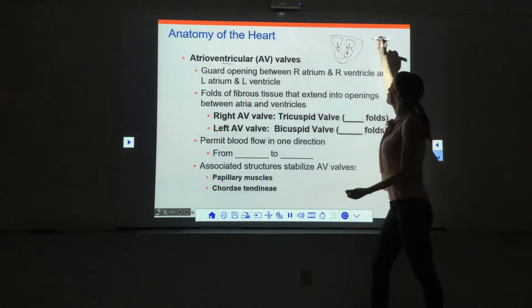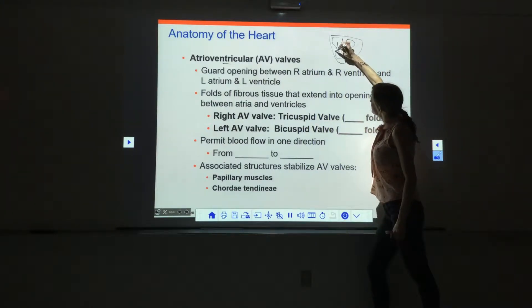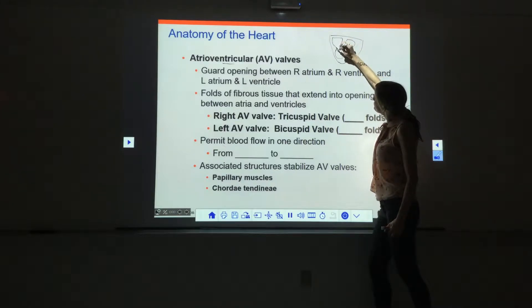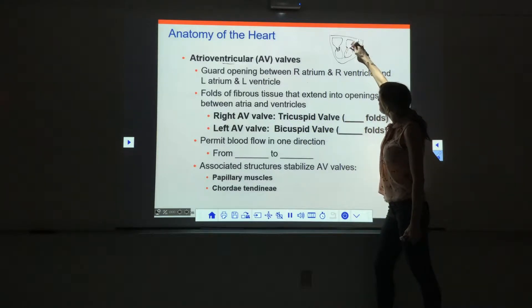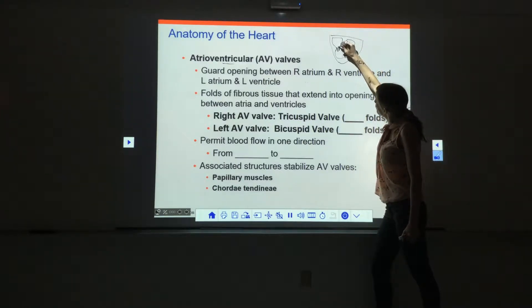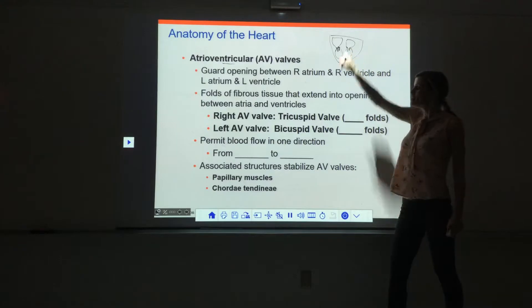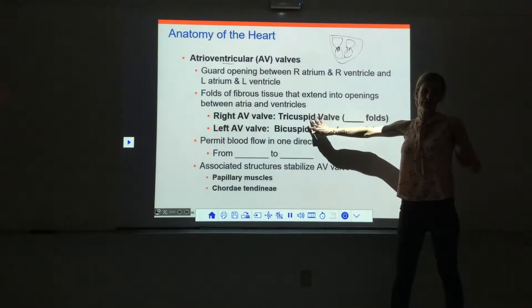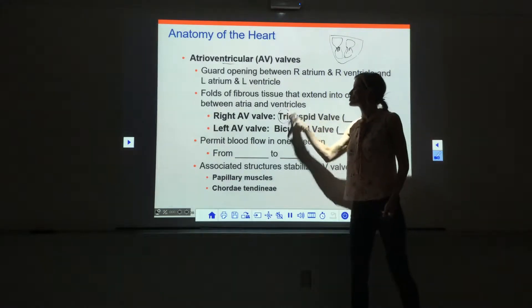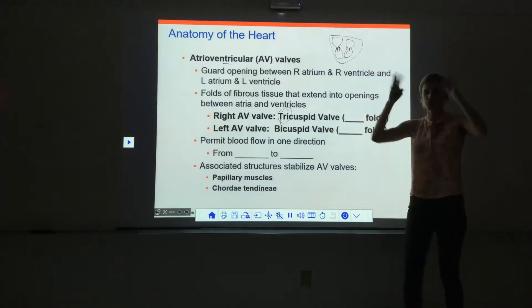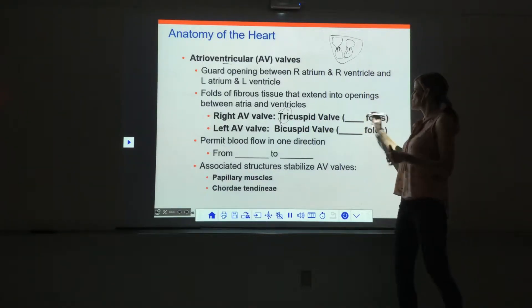The valves are made of little folds of fibrous tissue that extend from the endocardium. The endocardium layer comes up and then we have a strong fold of fibrous tissue that folds in, creating these little flaps that hang down into the hole. There are actually three on one side. The right AV valve is called the tricuspid valve — tri meaning three cusps or three flaps of tissue.